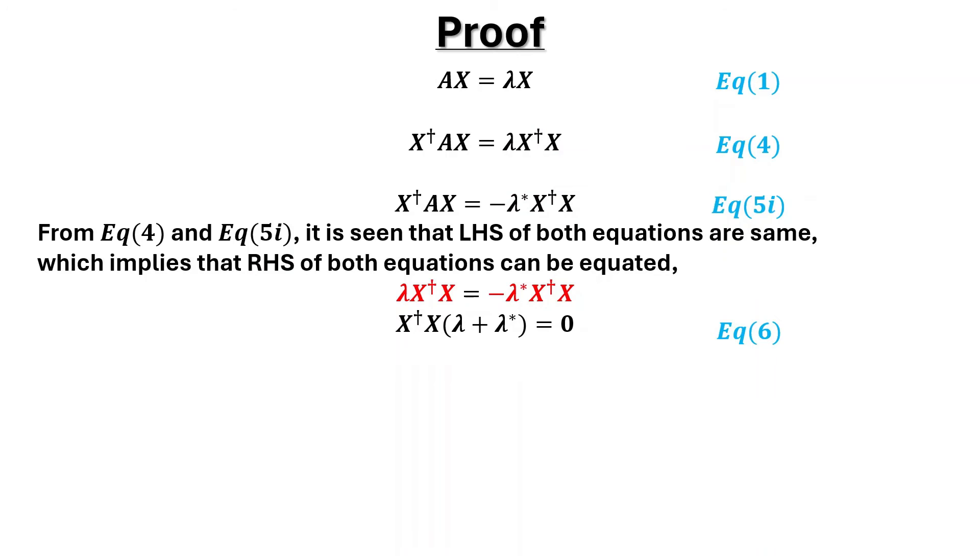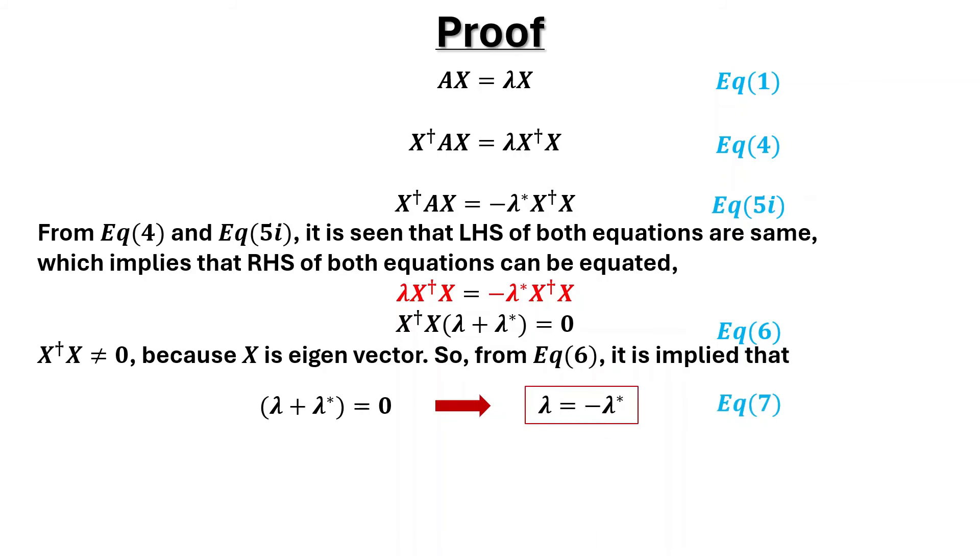We have equation 6. Now product of x dagger with x cannot be zero because x is eigenvector. So from equation 6, it is implied that sum of lambda and lambda conjugate equals zero, which further implies that lambda equals minus lambda conjugate, as given in equation 7.